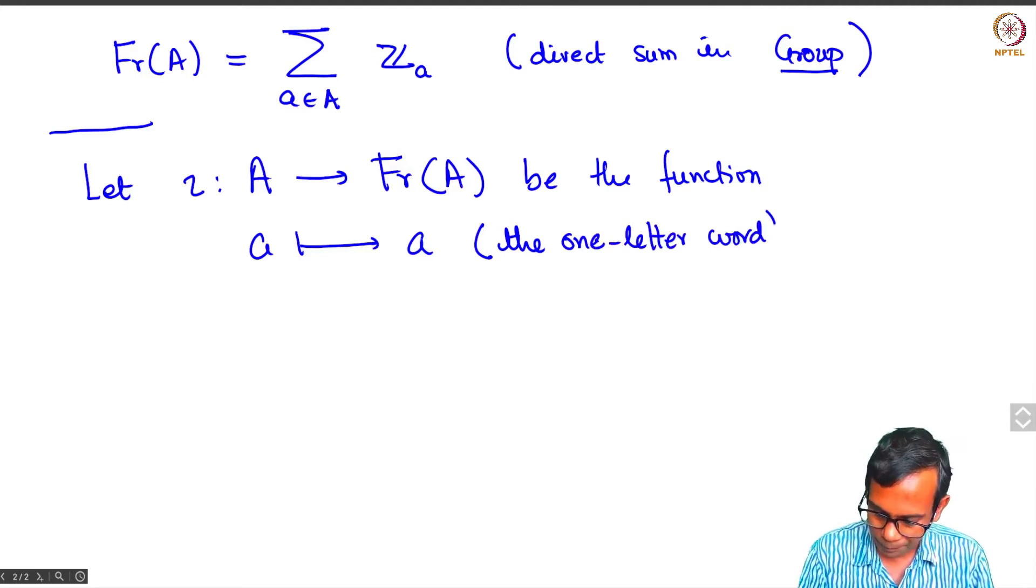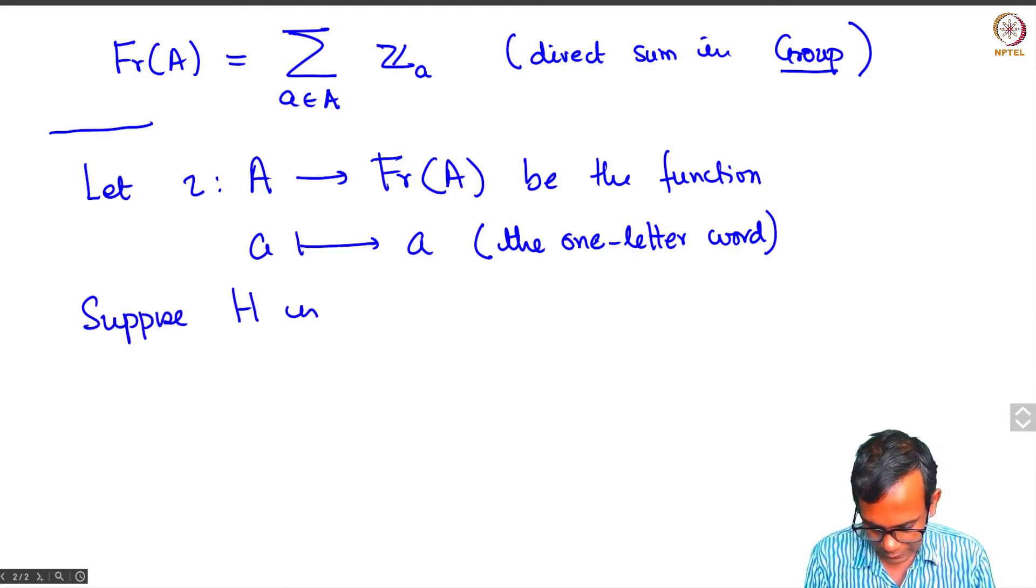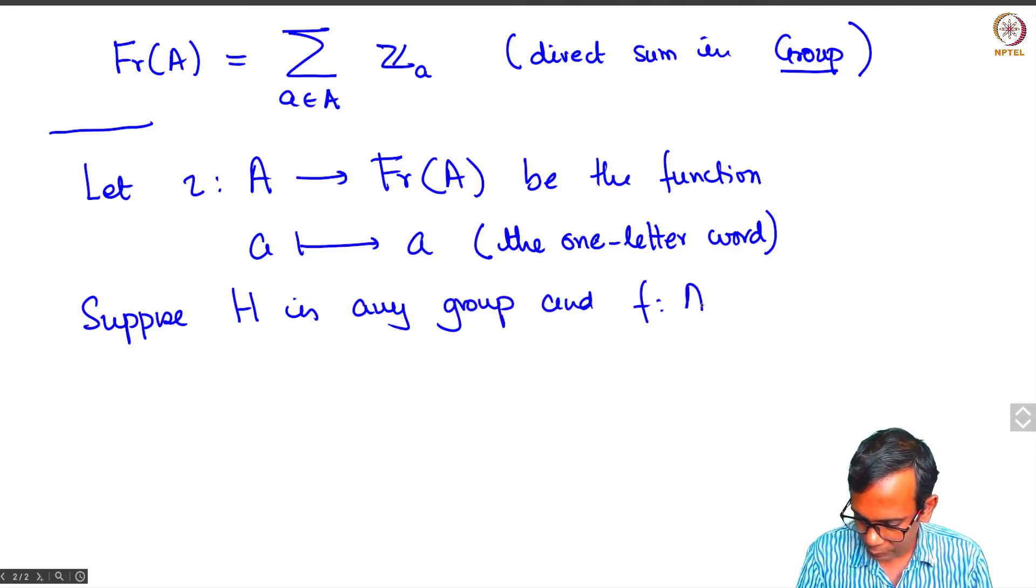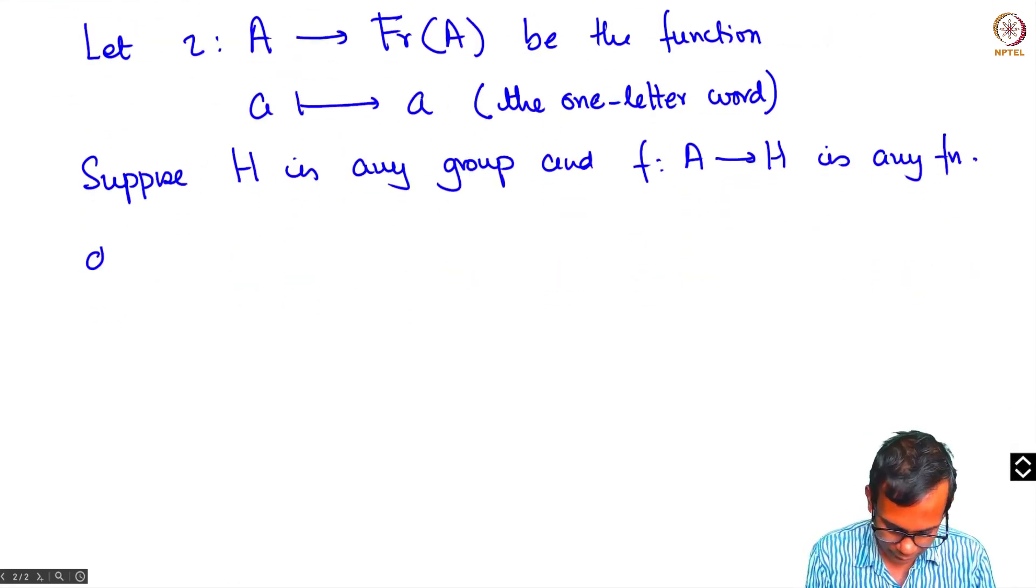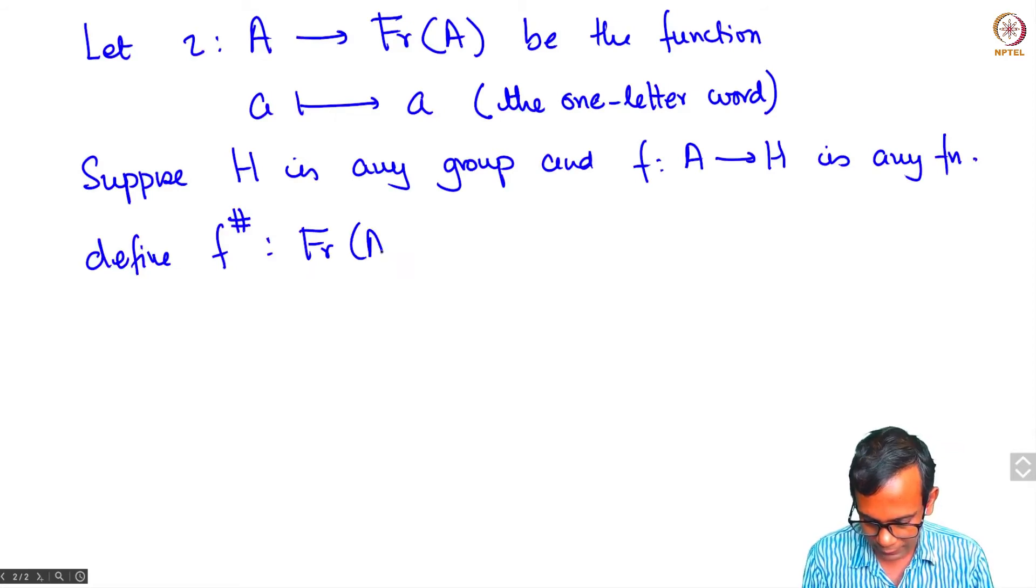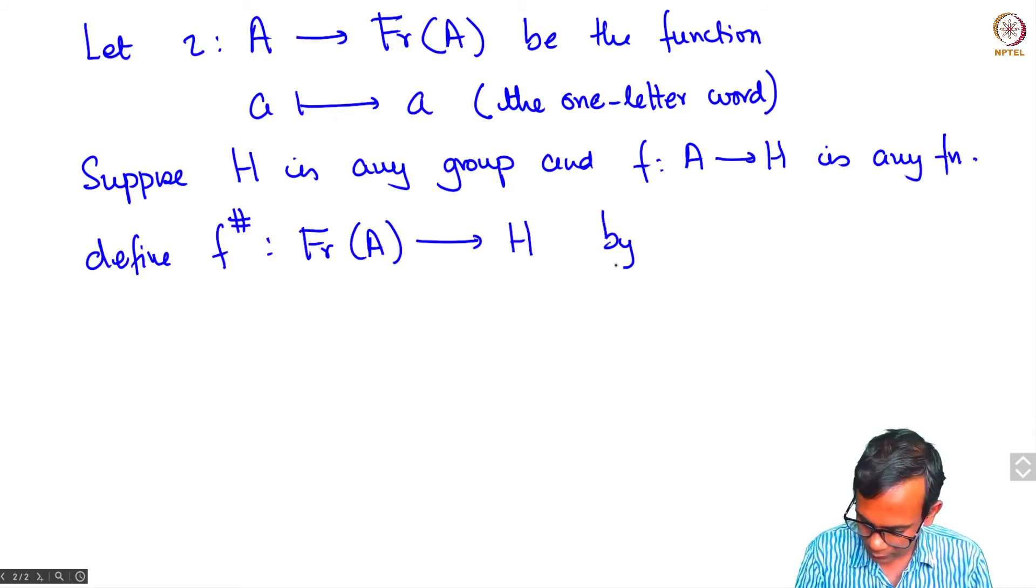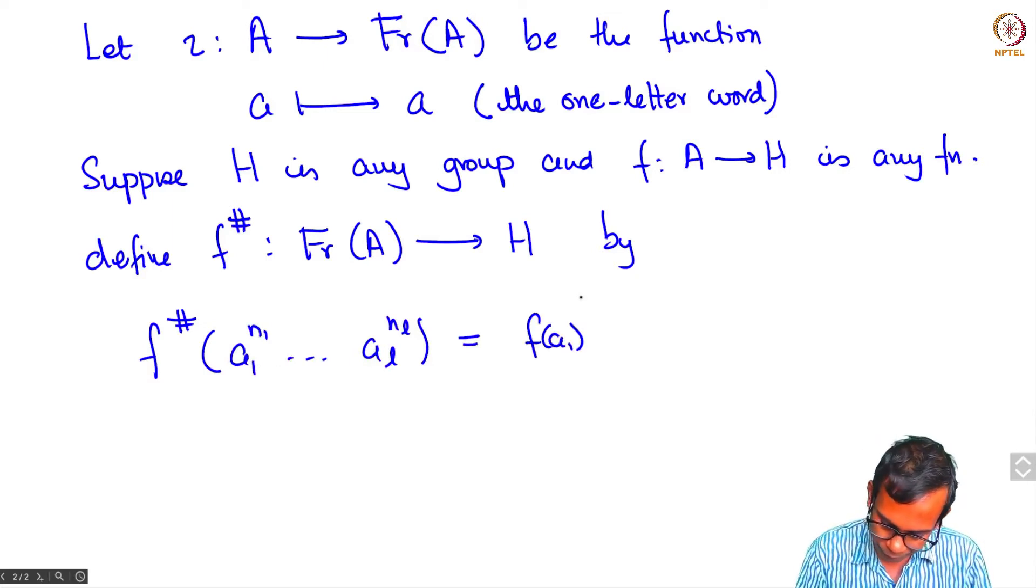So let eta from a to free groups on a be the function which takes a to a. Where this is to be thought of as the one letter word consisting of just one letter, namely a. Now suppose h is any group and f from a to h is any function. Then we can define f hash from the free group generated by a to h as follows. So I need to define f hash on every reduced word. So a1 to the n1, al to the nl will be f of a1 raised to the power n1 times f of al to the nl.